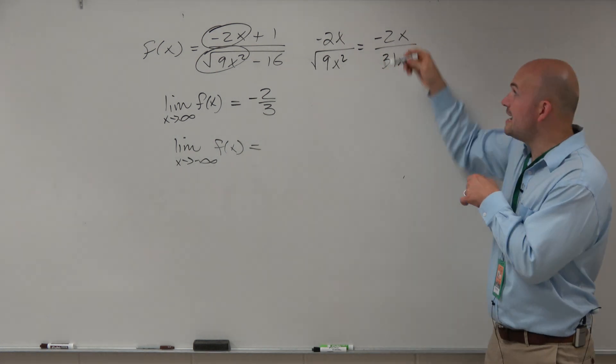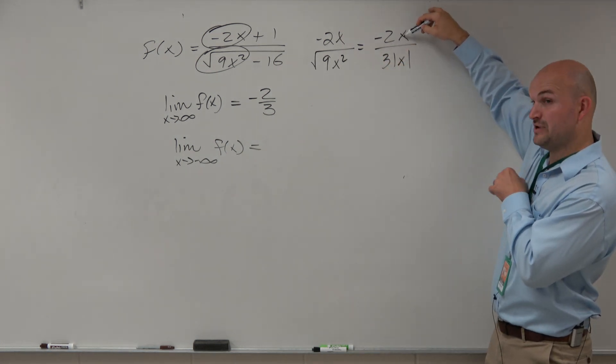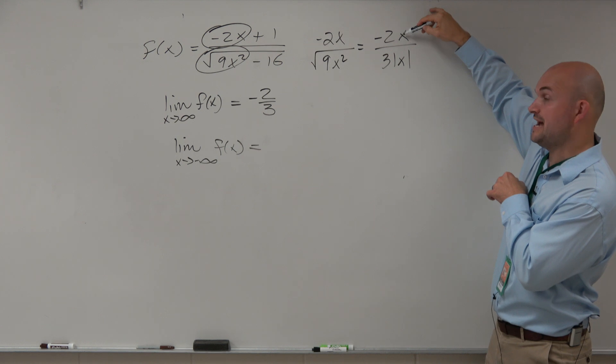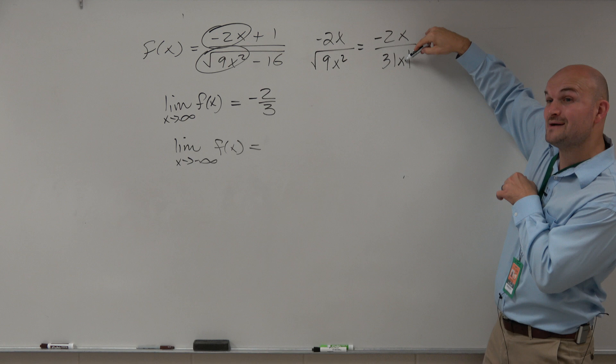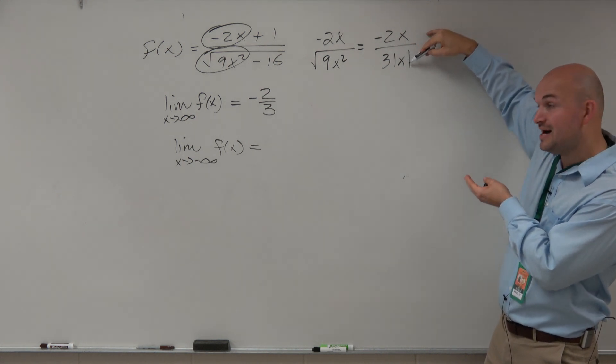But now look at this. What happens when I put in a negative? When I put in negative and negative values, I have a negative over another negative. Well, negative times negative is positive over the absolute value of a negative, which is positive.